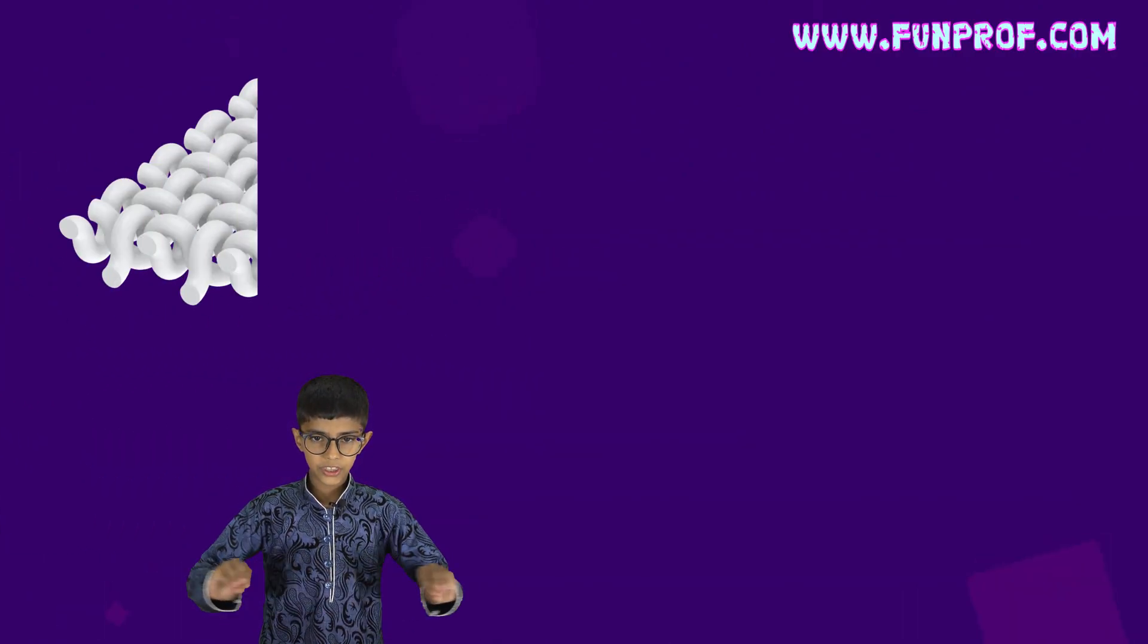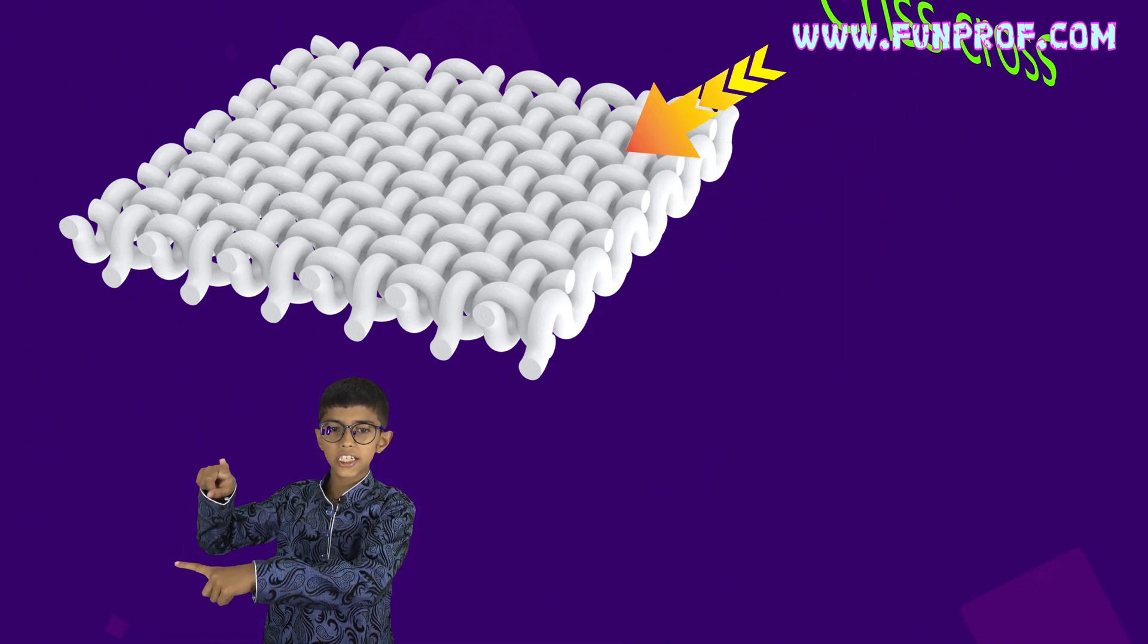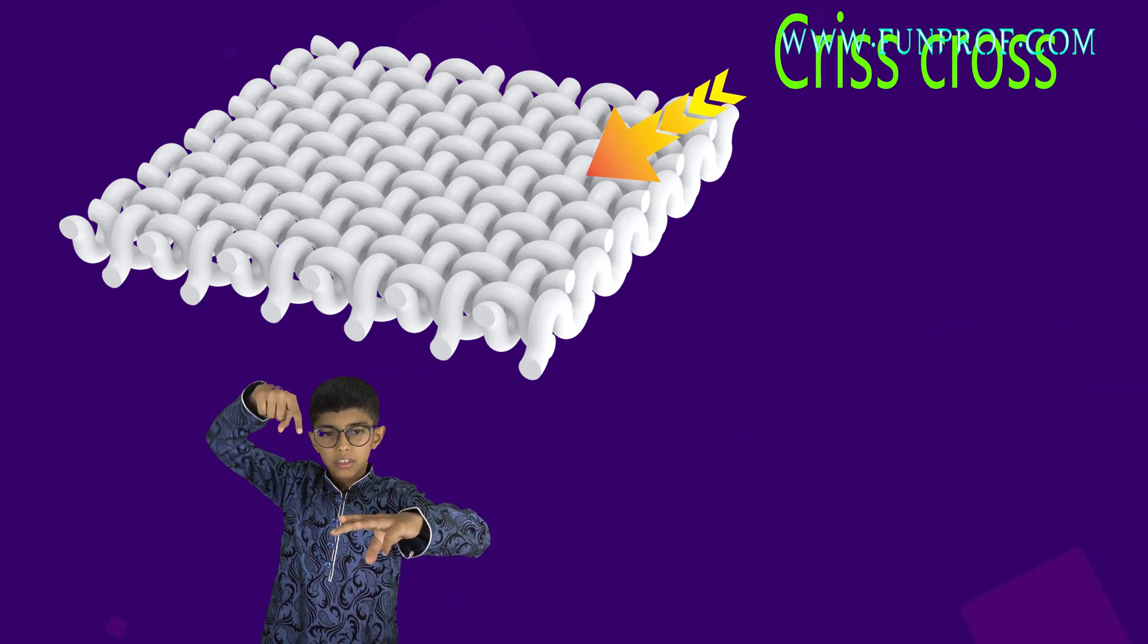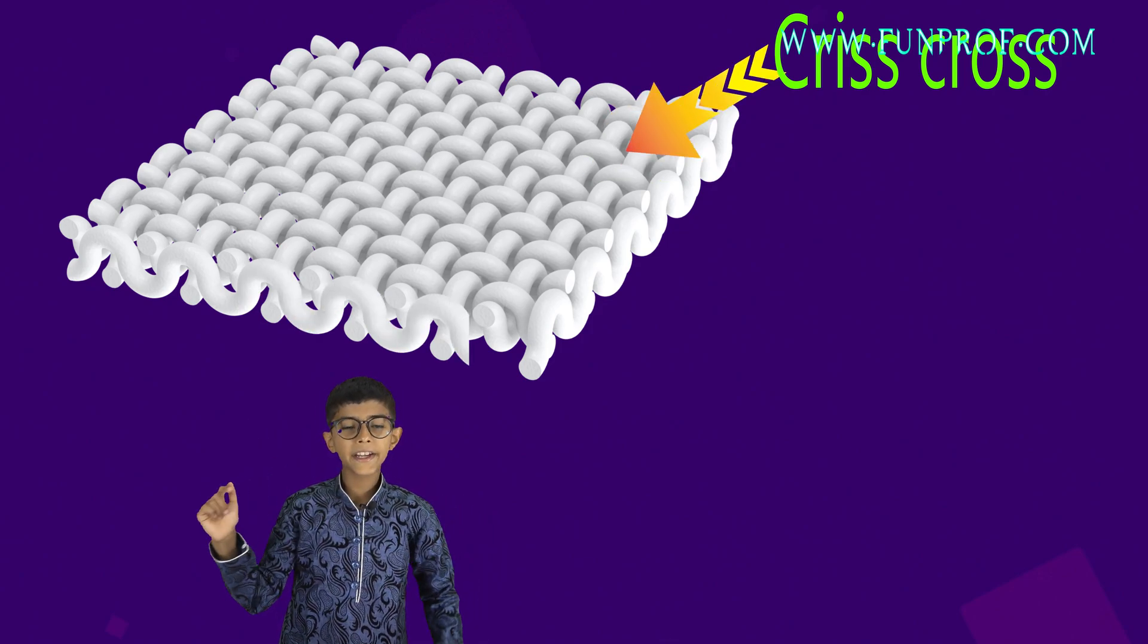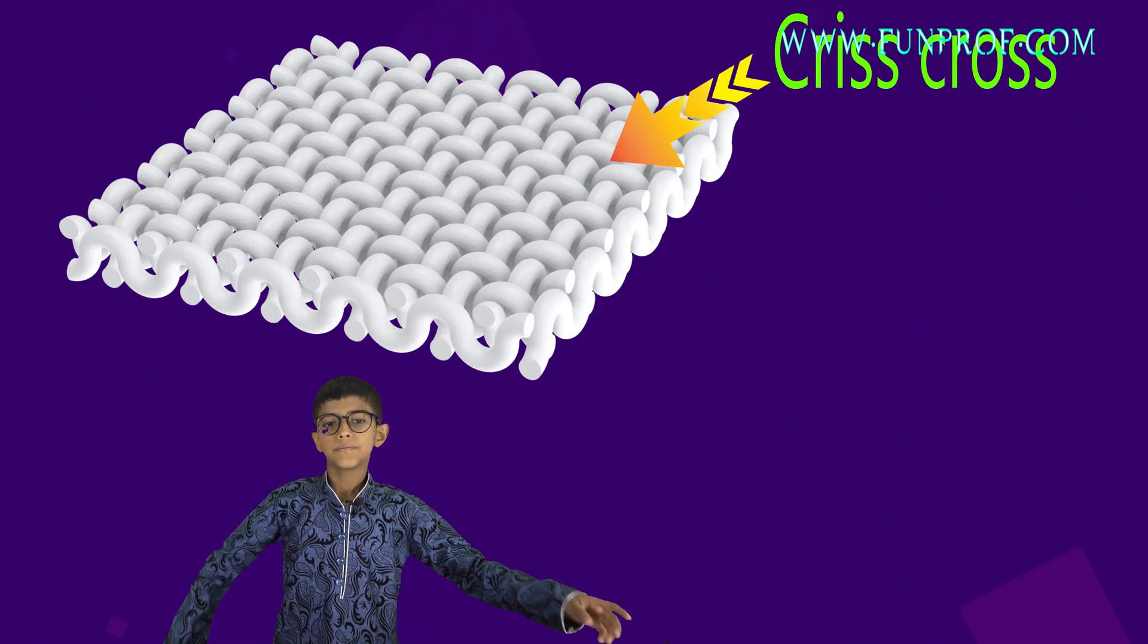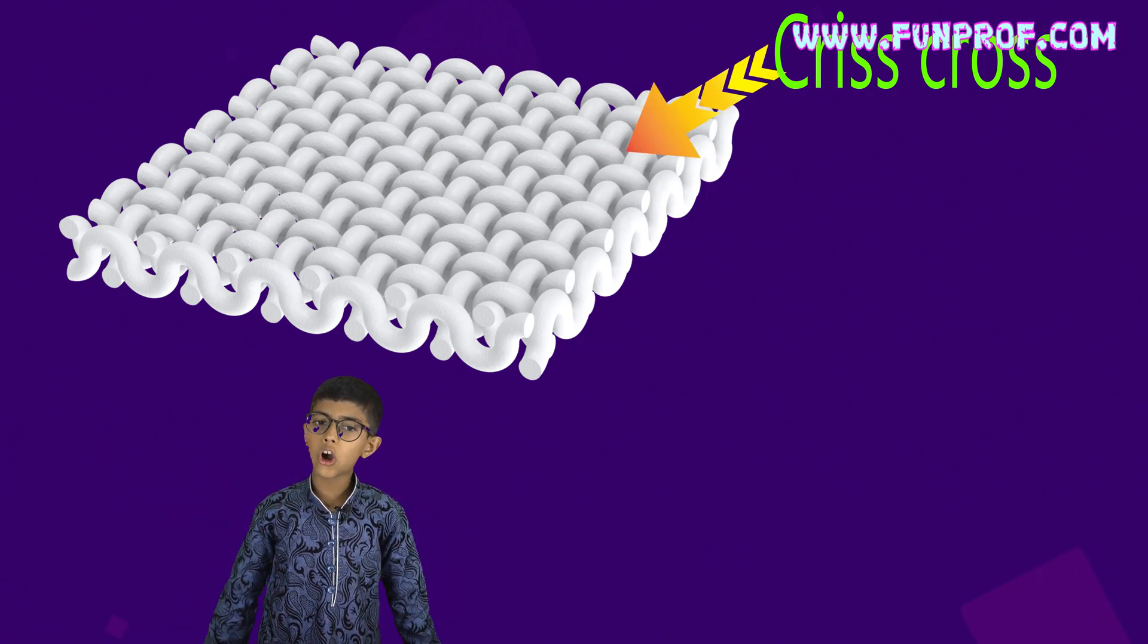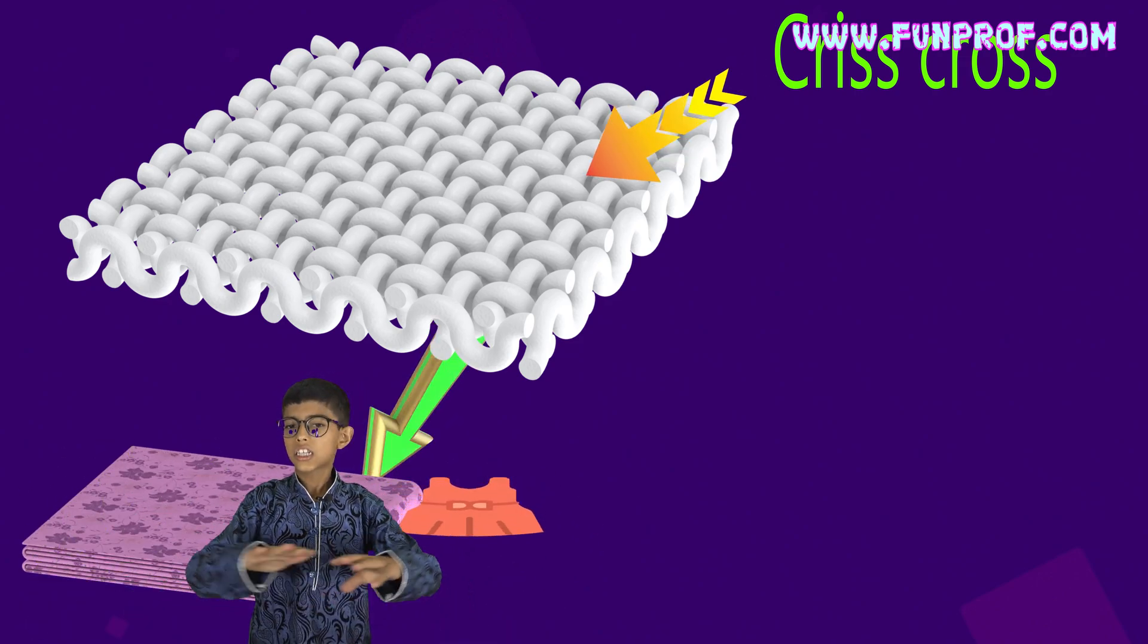Now with this thread, this thread is arranged crisscross like this. First will go down, then come up, then go down and it will go like this. Because many threads will go like that, so it will make a sari or a cloth.